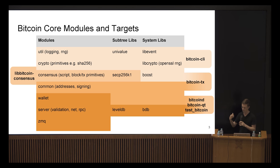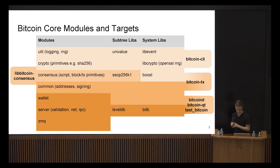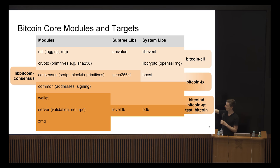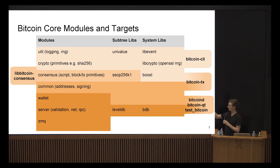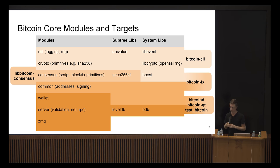Bitcoin-cli lets you ask for the chain state, maybe mempool state, maybe wallet state, and it depends on the basic modules. We also have some libraries included directly as a subtree — either for convenience, like UniValue, which isn't commonly distributed on major distributions, so we include it for convenience.